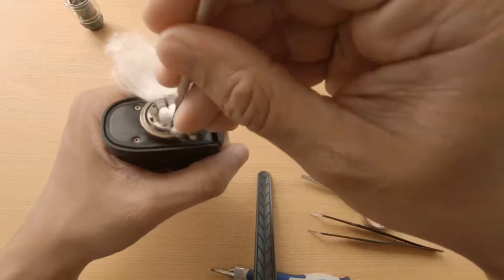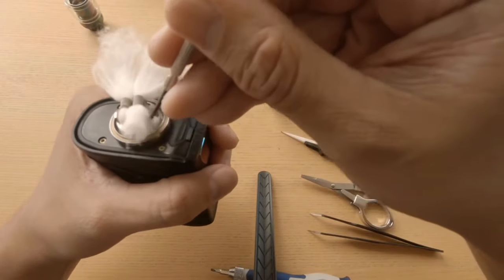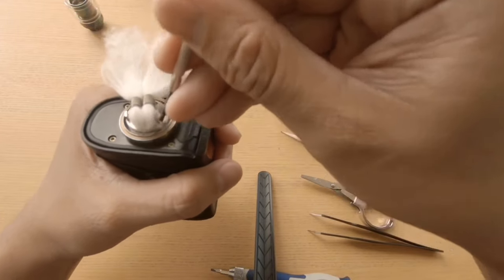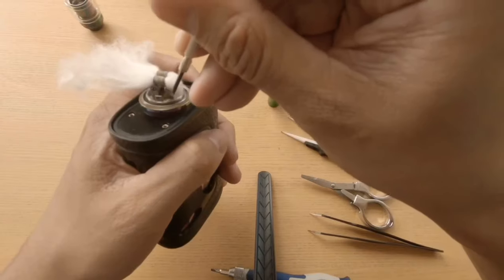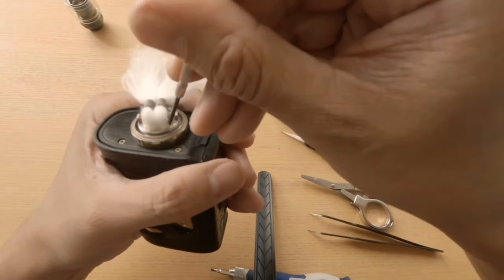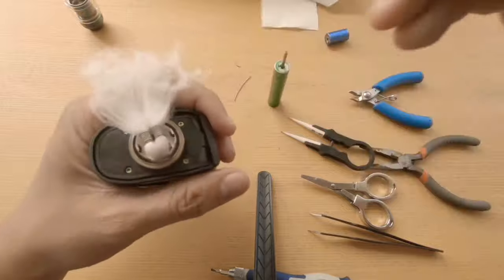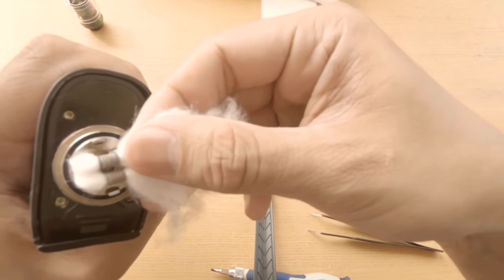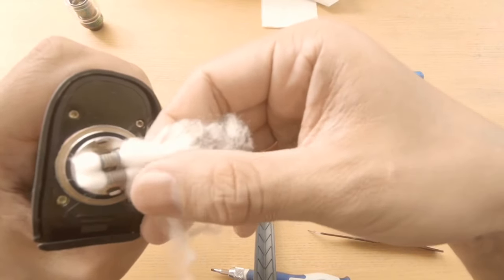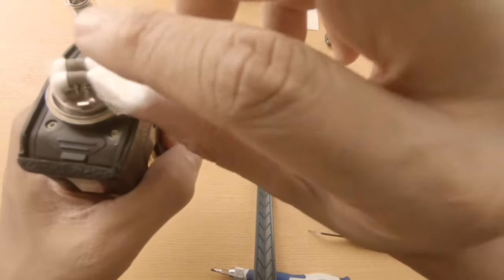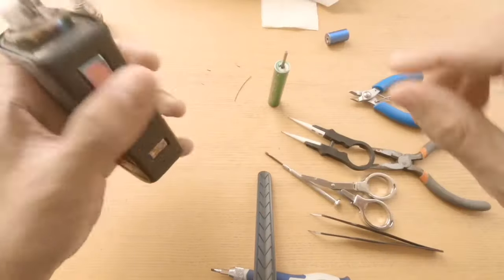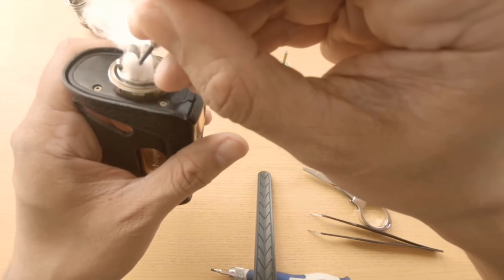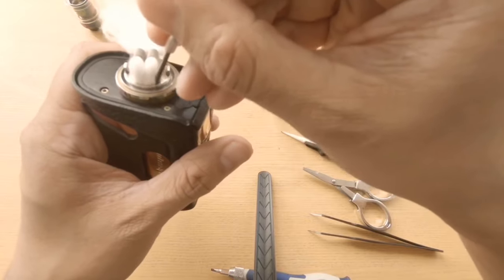And then you thread it through. It's a bit long so I'll pull it from here. I'll just raise it a little to be almost level with this ring, the border. Because if you push it all the way down to the very bottom, the juice will have difficulty climbing up, which causes dry hits.